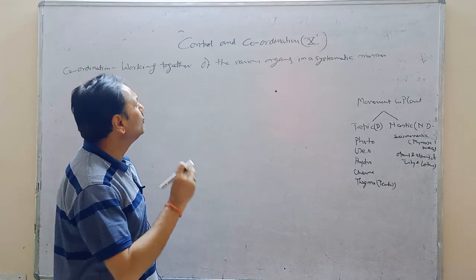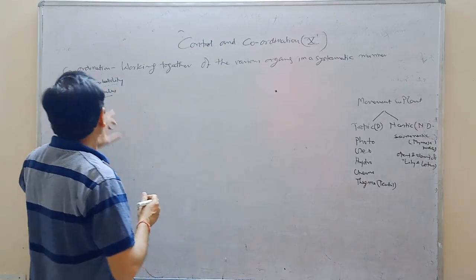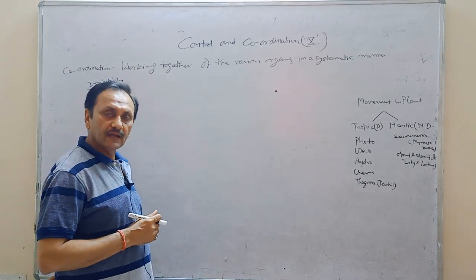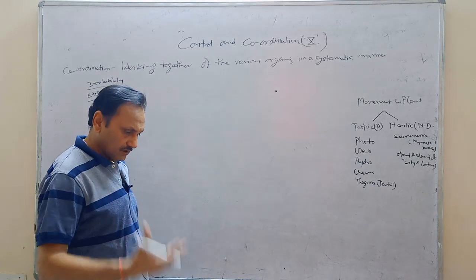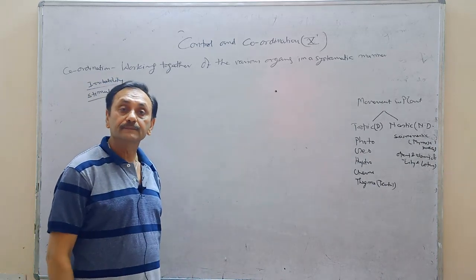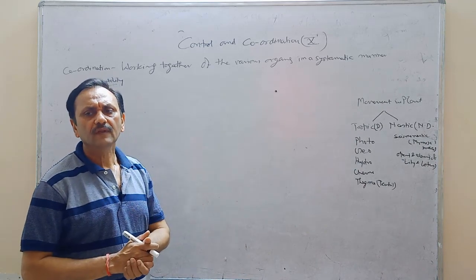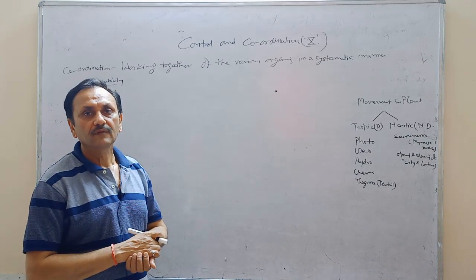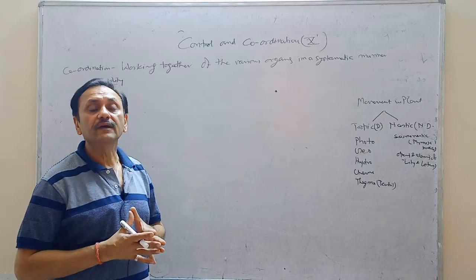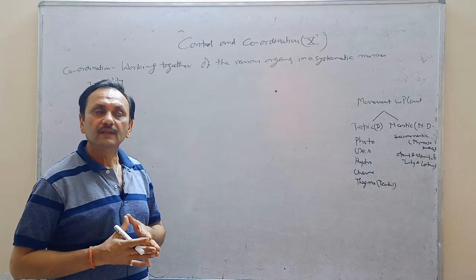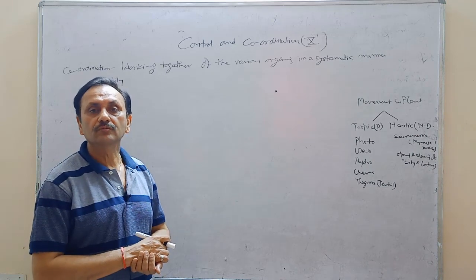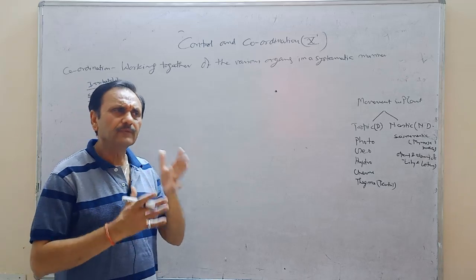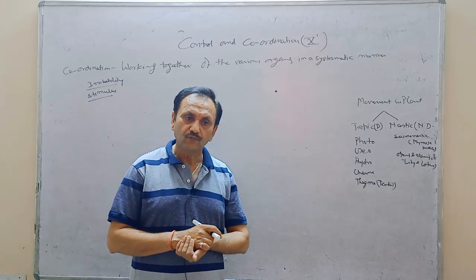Firstly, what do you mean by coordination? It is the working together of the various organs in a systematic manner. In the case of animals, the body is very much complicated. They have organs and systems of organization. It has various controlling devices: chemical control, electrical control, hormonal control, and neural control. With the help of that control system, our body goes on smoothly.